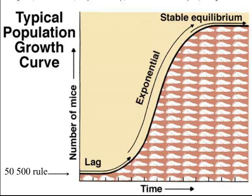Once the population does grow, most populations tend to grow exponentially. That is, two individuals make four, make eight, make sixteen. The numbers don't grow arithmetically — they don't go one, two, three, four — the population explodes in number. Rapid, rapid growth rate. We see this exponential, very steep curve.